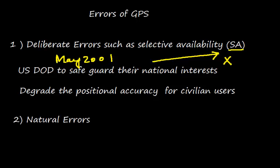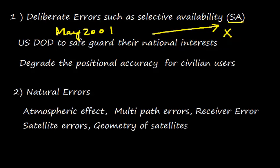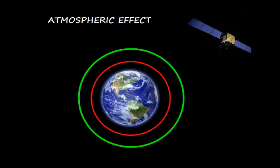The other types of errors are natural errors, which could be because of atmospheric effect, multipath errors, receiver error, satellite errors, and the geometry of satellites. Let us now discuss the atmospheric effect on GPS.